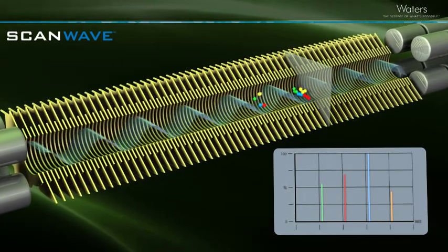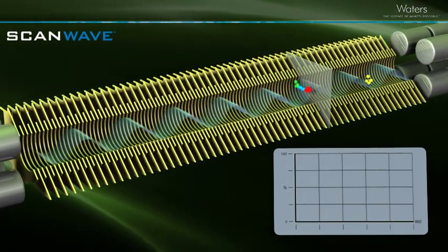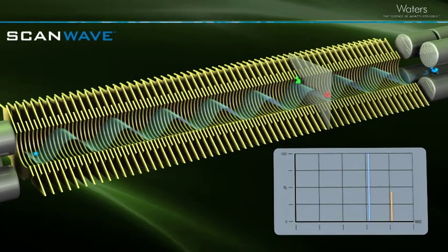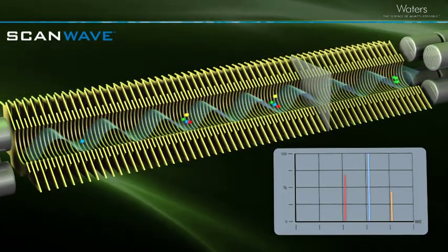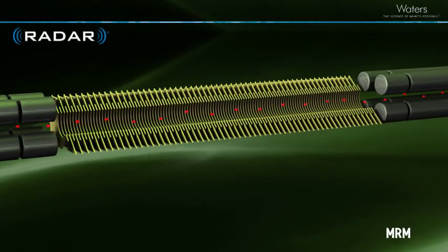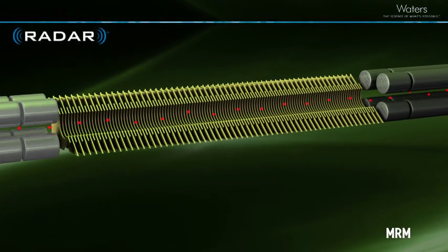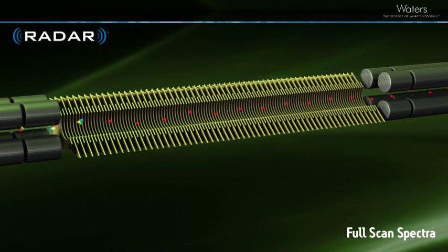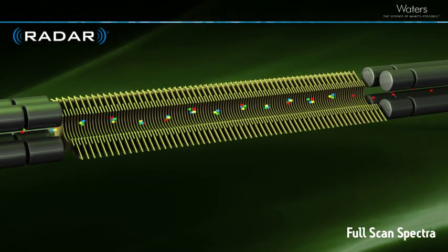This means the Zevo TQS will give you both the very best quantitative data as well as superior spectral MS-MS information. Another key capability provided by this unique collision cell is an information-rich acquisition mode called Radar.